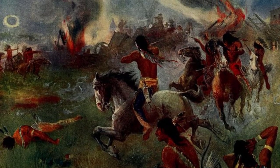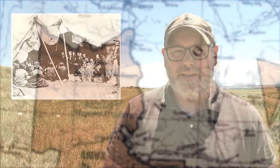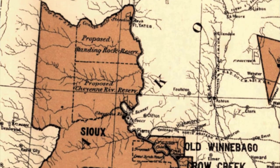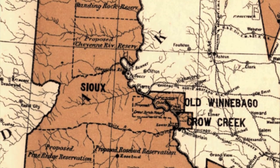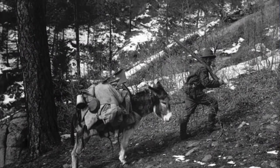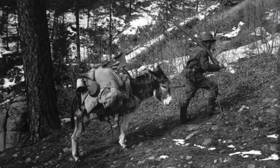In 1868, the U.S. government and leaders of the Lakota and Cheyenne had signed the Treaty of Fort Laramie. Within the agreement was established the Great Sioux Reservation, in which basically the entire western half of South Dakota would be designated as Native American land. The treaty also stated that no white men could enter the territory except for government officials on official business.